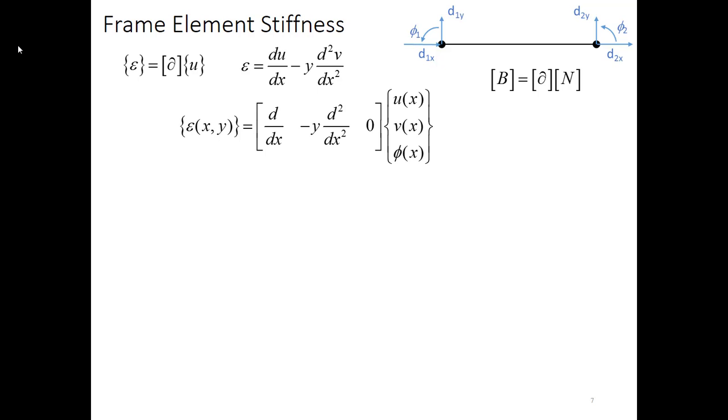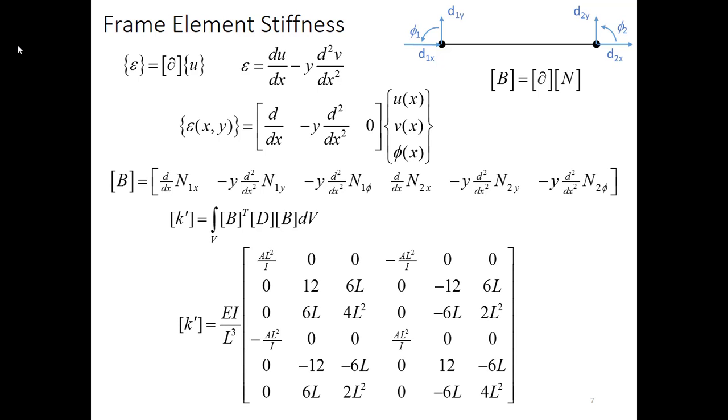Multiply that by the shape function matrix from the last slide and we can get our B matrix, another row matrix. Put this B matrix into our expression for the stiffness matrix in local coordinates that came from the potential energy formulation. And we get this stiffness matrix shown. So we can certainly go through that process.